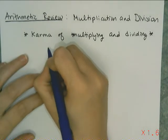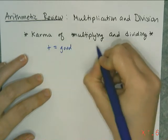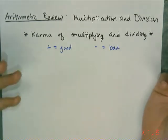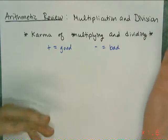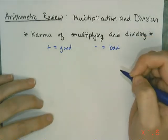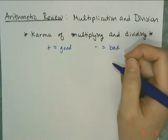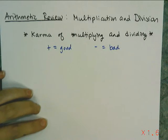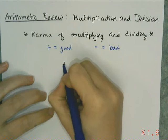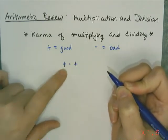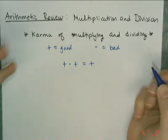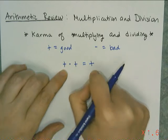We're going to assume that positive equals good and negative equals bad. There are good people in this world and there are bad people, and there are good things and bad things that can happen. Our examples for good people are going to be Gandhi, our bad person is Hitler, our good thing is winning the lottery, and our bad thing is getting hit by a truck. So when I multiply or divide a positive times a positive, it's like a good thing happening to a good person, which we want to happen, which is good. We want good things to happen to good people, so a positive times a positive is a positive.